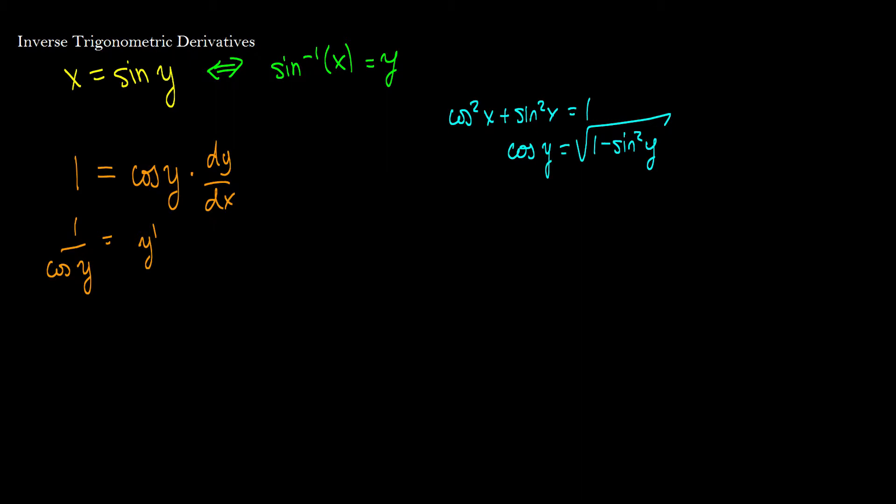Okay, well, if x is sine y, then this is the same thing as the root of 1 minus x squared, because x is equal to sine y. And sine y squared is the same thing as sine to the 2 of y. Okay, so we can rewrite this derivative over here as y prime is equal to 1 over the square root of 1 minus x squared. And this is the derivative of sine inverse x.